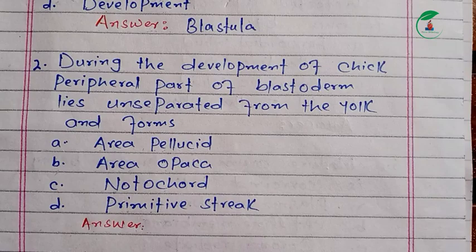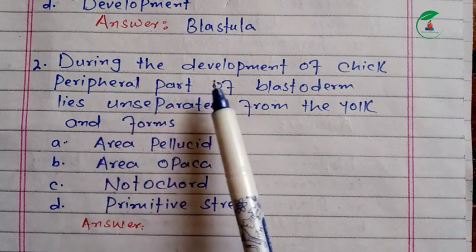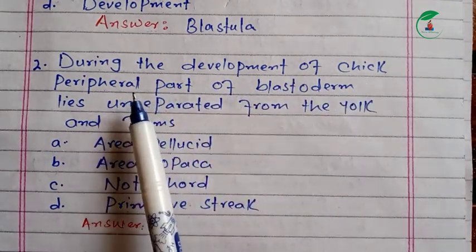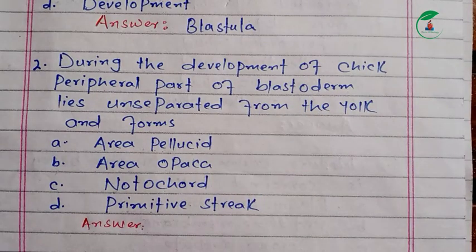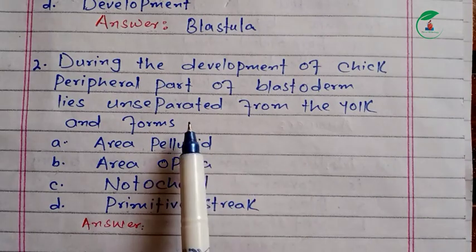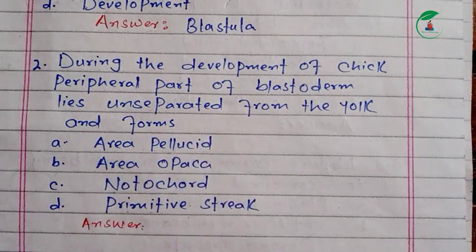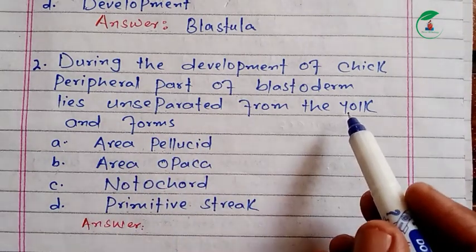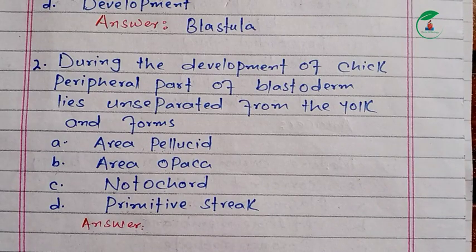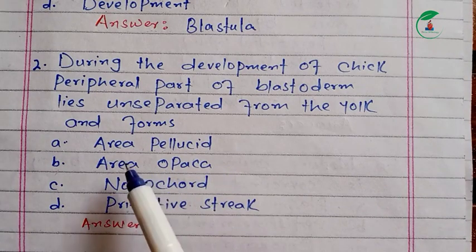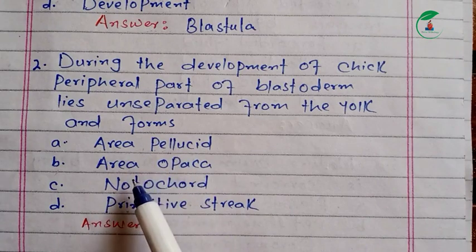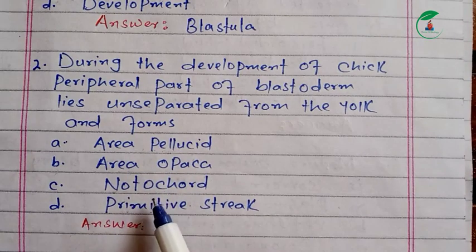During the development of the chick, the peripheral part of the blastoderm lies unseparated from the yolk. The blastoderm has distinct areas. The answer involves area pellucida or area opaca, and also the notochord or primitive streak. The correct answer is the notochord.